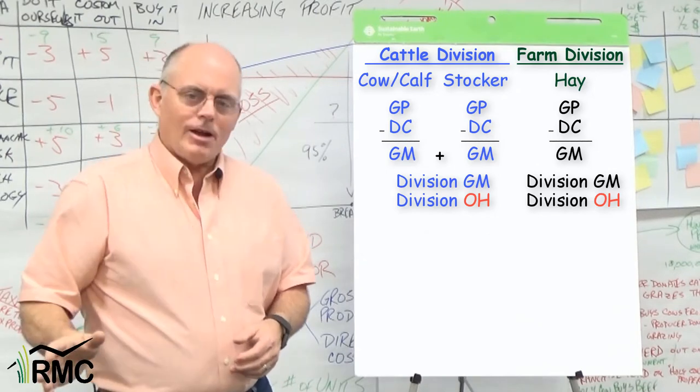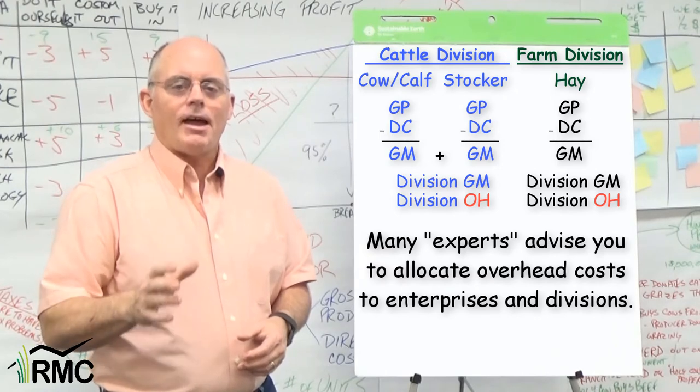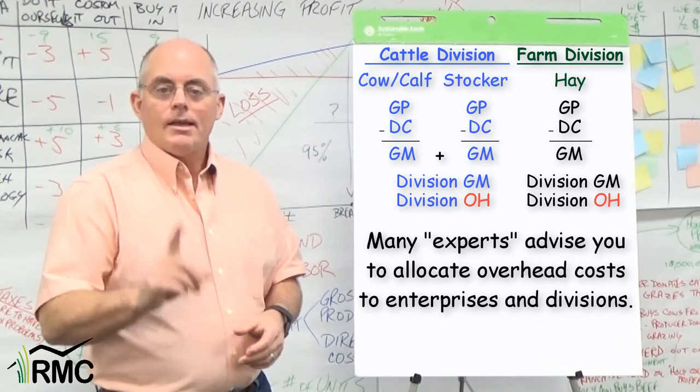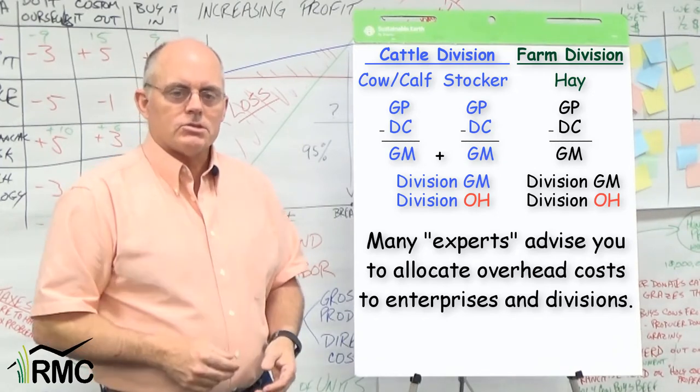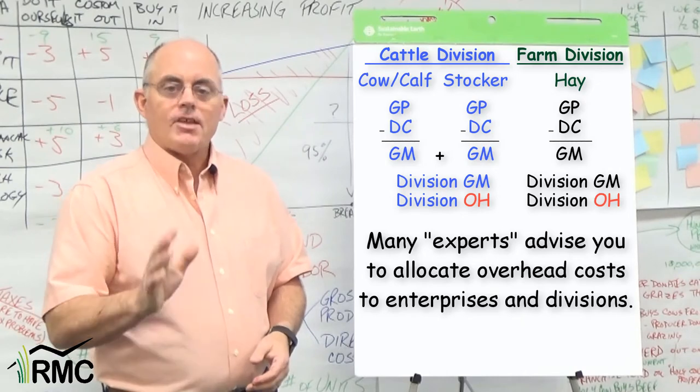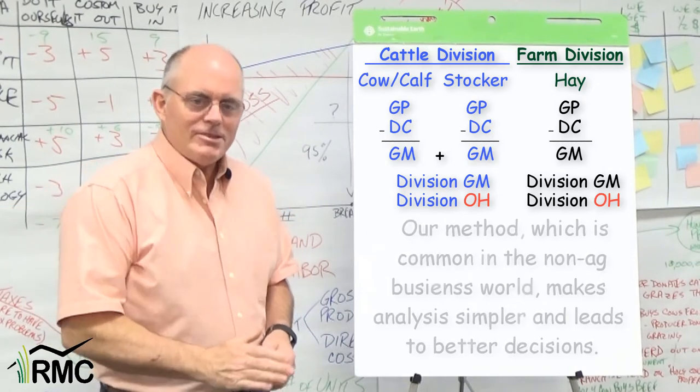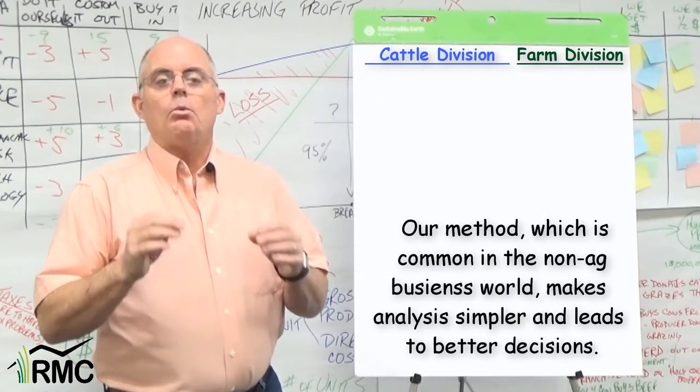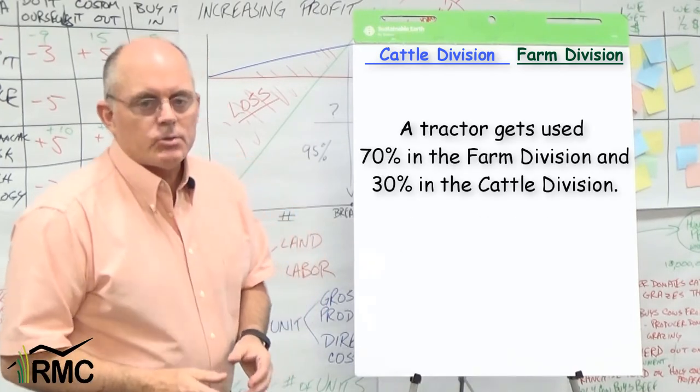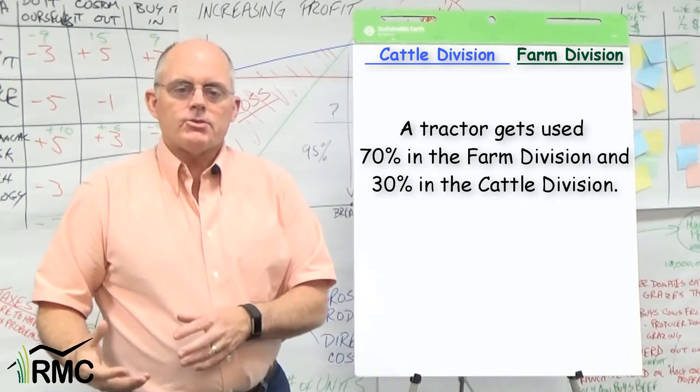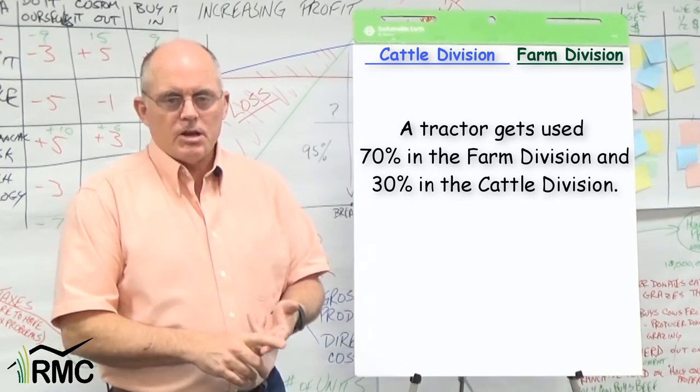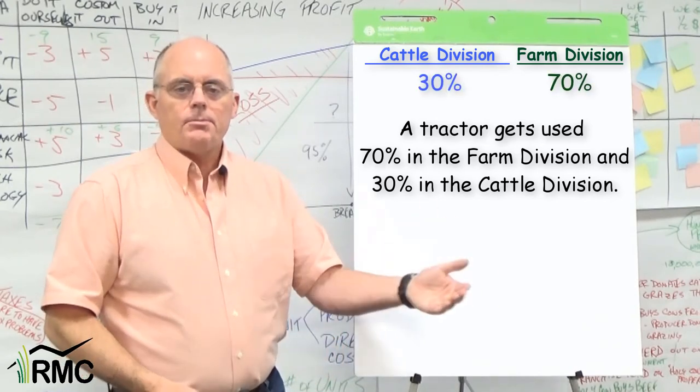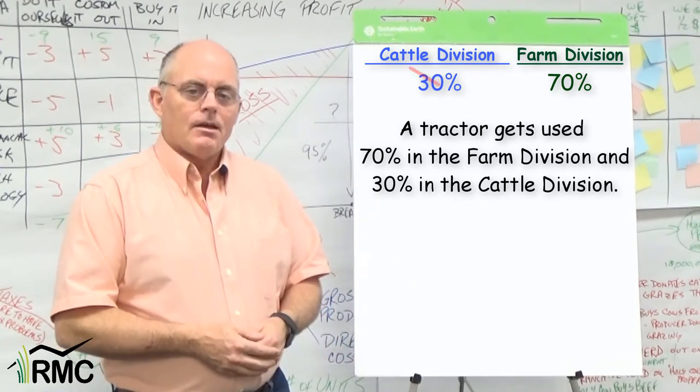Now everyone you have ever talked to about this sort of thing has probably advised you to allocate all of your costs, including your overheads, to the enterprises or divisions that incurred those costs, even if it means splitting the costs between divisions. On the surface, that may make sense, but when you dive into the numbers, it makes the analysis extremely difficult. So here's an example of exactly what not to do. Let's say that we have a tractor that we use 70% on the farming side and 30% on the livestock side of the business. Depreciation and interest on that tractor are overhead costs. Most people would split that cost, allocating 70% to the farming and 30% to the cattle. Don't do it.